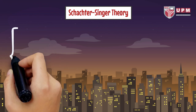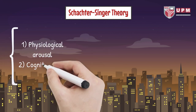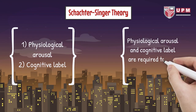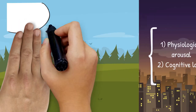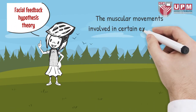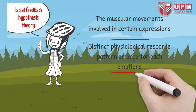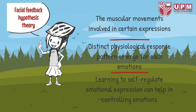The third theory of emotion is Schachter-Singer theory, also known as two-factor theory of emotion. Physiological arousal and a cognitive label are both required to have an emotion. Facial feedback hypothesis theory involves the muscular movements in certain expressions. Distinct physiological response patterns emerge for each emotion. Learning to self-regulate emotional expression can help in controlling emotions.